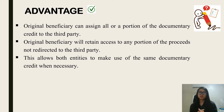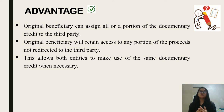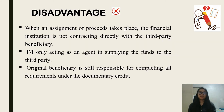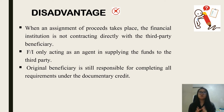There are three advantages and three disadvantages in assignment of proceed. The first advantage is that the original beneficiary can assign the documentary credit to a third party, either fully or partially, and can also retain access to any portion of the proceeds not redirected to the third party. This condition allows both parties to make use of the same documentary credit when necessary. The disadvantage is that when an assignment of proceed takes place, the financial institution is not contracting directly with the third party beneficiary; they only act as an agent in supplying the funds. The original beneficiary is still responsible for completing all the requirements under the documentary credit.